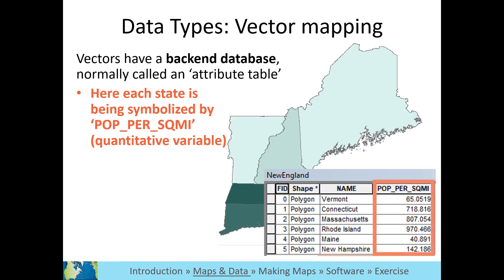Here the map was color-coded based on a quantitative or numerical variable, population per square mile, where each class of values was symbolized by a different shade of the same color. We will talk about classes in depth in another video.